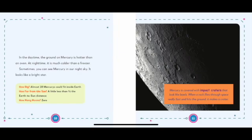How big? Almost 18 Mercuries could fit inside Earth. How far from the sun? A little less than half the Earth to the sun distance. How many moons? Zero.